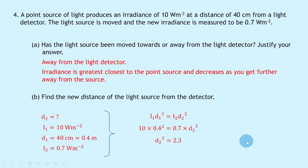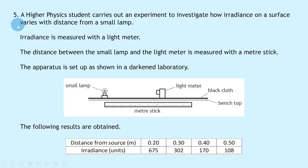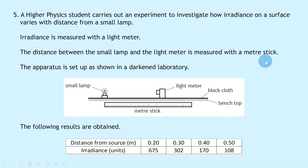Question 5 says: a Higher Physics student carries out an experiment to investigate how irradiance on a surface varies with distance from a small lamp. Irradiance is measured with a light meter, and distance is measured with a meter stick. The apparatus is set up in a darkened laboratory with the small lamp as the point source, a light meter, a black cloth on the benchtop, and a meter stick to move the light meter to different distances.